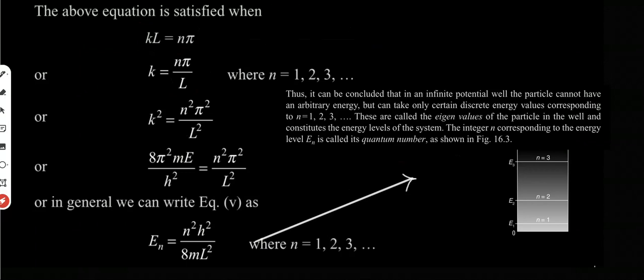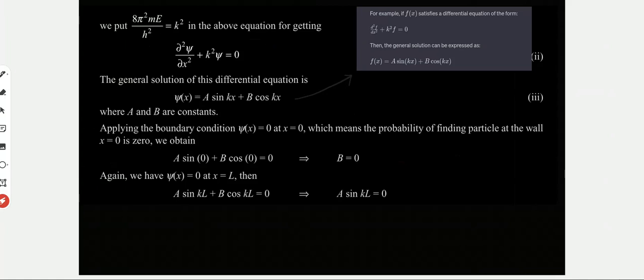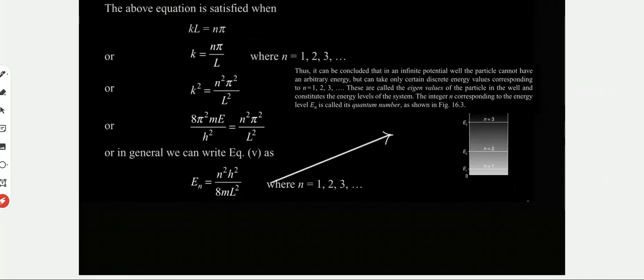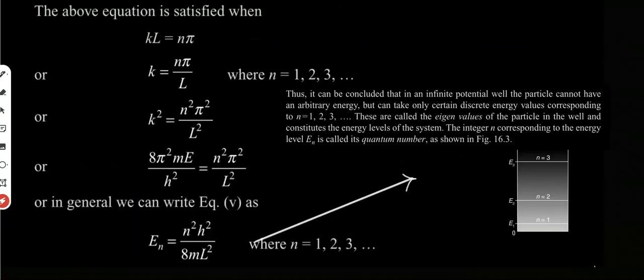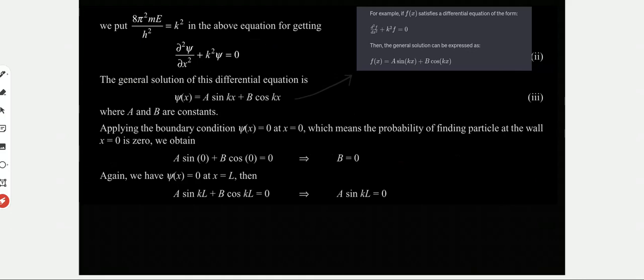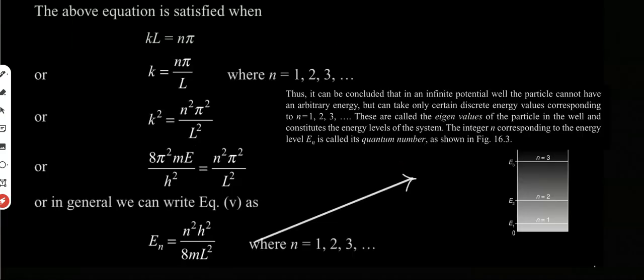So K equals nπ/L, meaning K² equals n²π²/L². We already have the substitution K² equals 8π²mE/h², so 8π²mE/h² equals n²π²/L². Solving for E, we get E equals n²h²/8mL². Here n equals 1, 2, 3 and so on.